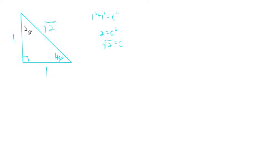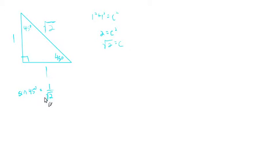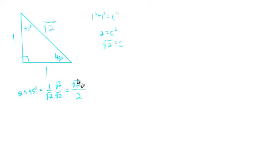The trig values of 45°: sin(45°) is opposite over hypotenuse = 1/√2. We rationalize the denominator because of historical tools like the slide rule, which couldn't divide by √2 but could divide a square root by a number. √2 × √2 = 2, so 1/√2 = √2/2. Therefore, sin(45°) = √2/2. The cosine of 45° is also adjacent over hypotenuse = 1/√2 = √2/2.